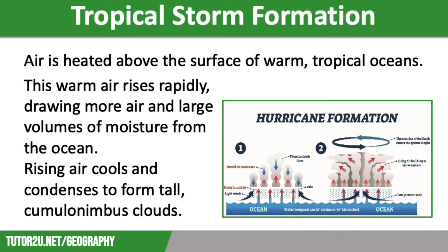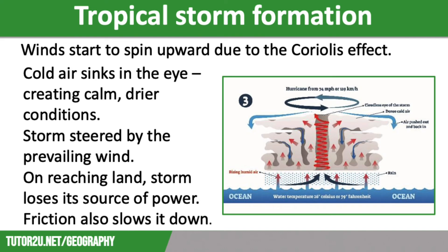There will be low winds present that allow the tropical storm clouds to rise high without being torn apart. The winds will then start to spin upwards due to the Coriolis effect, which is the effect of the Earth's rotation. In the centre of the storm, there is an eye where conditions are calm. This is formed by cool air sinking, creating a zone of high pressure, which leads to calm, drier conditions. The storm will be steered by trade winds towards the land. Once it makes landfall, the energy will start to subside as the storm has lost its source of power. This is why most tropical storm damage occurs along the coast.